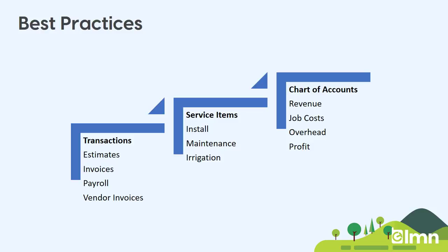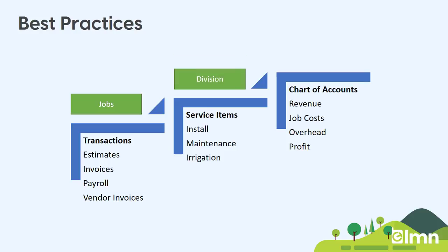Here's a brief overview of what things are going to look like when you finish this setup. You're going to have transactions like estimates, invoices, payroll, or vendor invoices — and instead of referencing your chart of accounts directly, those transactions will reference service items. Your service items might represent divisions, such as your install division, maintenance division, and irrigation division. Those service items will be linked to individual chart of accounts, and the chart of accounts is where ultimately your revenue, job costs, overhead, and profits show up in your company reporting. Jobs reference transactions, divisions represent service items, and your company as a whole is represented by your chart of accounts.